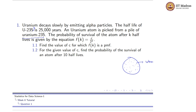The probability of survival of the atom after k half-lives is given by the equation f(k) = c / 2^k. Find the value of c for which f(k) is a PMF.